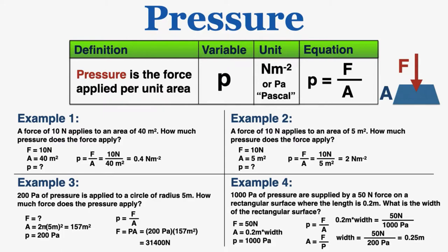There are some pressure problems where you have to calculate the area the pressure is applying to. In problem three, you're given a circle of radius five, so you just have to know that the area of a circle is pi times the radius squared. And in example four, you're given a rectangle with a length of 0.2, and you need to calculate its width. So geometry comes into pressure equations at times.